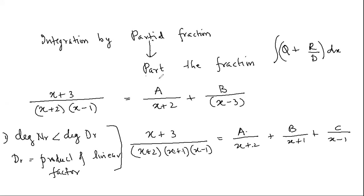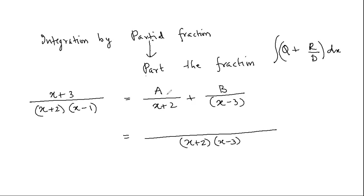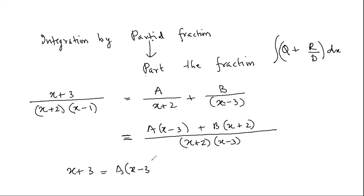Now I'm going to teach you how to get the value of A and B. A and B are the numbers which make the left-hand side equal to the right-hand side — they are equation-balancing numbers. When I take the LCM, A and B will cross-multiply, giving: x + 3 = A(x − 3) + B(x + 2). Is this clear to everybody?